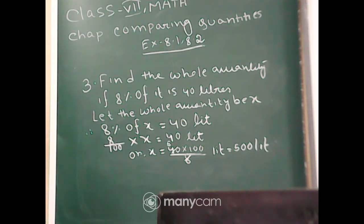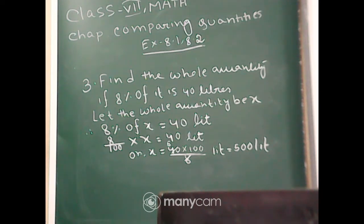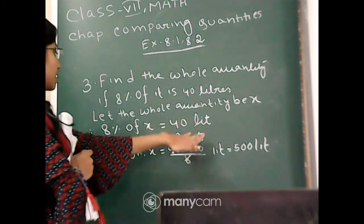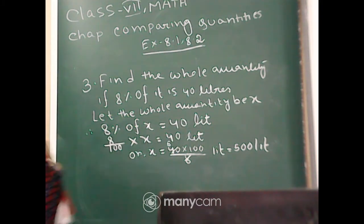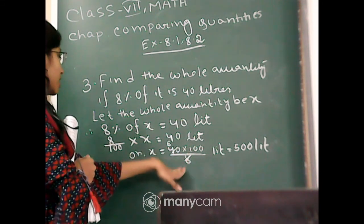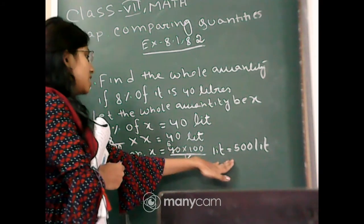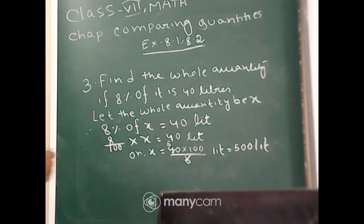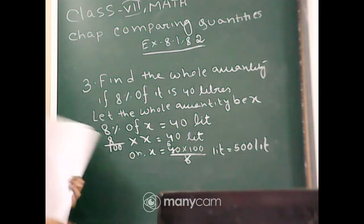Again I repeat: let the whole quantity be x. Therefore, from the given condition, 8 percentage of x is equal to 40 liters. 8 percentage means 8 divided by 100, 'of' means multiplication. So, 8 divided by 100 into x is equal to 40 liters. Therefore, x is equal to 40 into 100 divided by 8, and the answer is 500 liters — that is, the whole quantity is 500 liters.